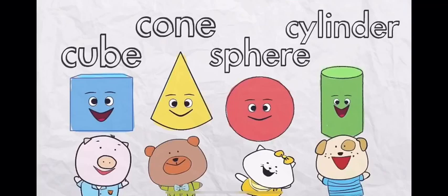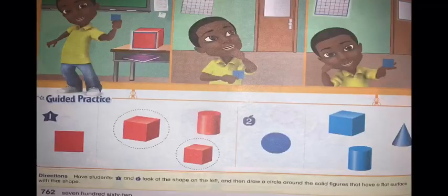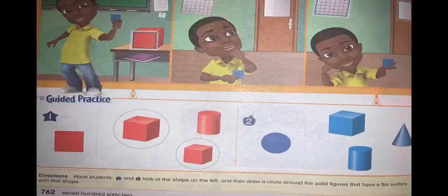Now let's start with the book. They already did number one for us. Let's begin with number two. They gave me a shape that is a circle. What shape is this? It's a circle.